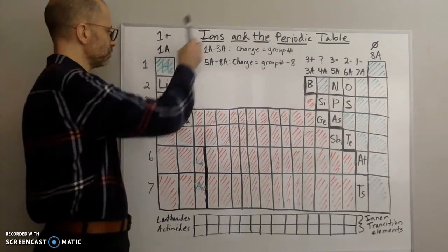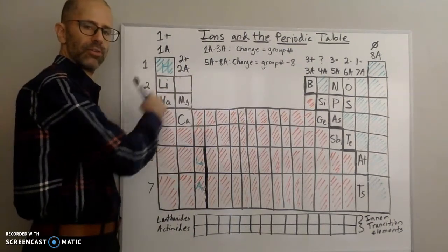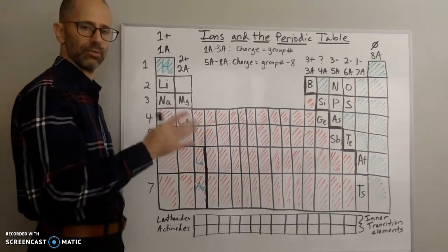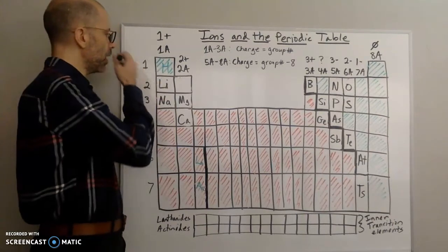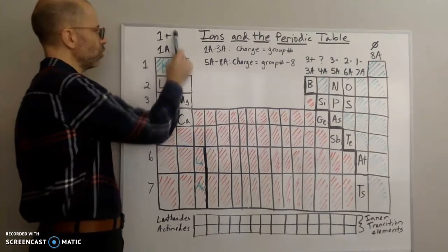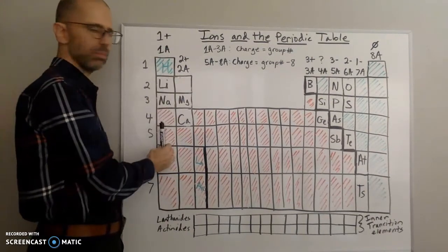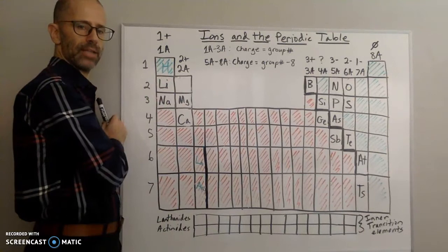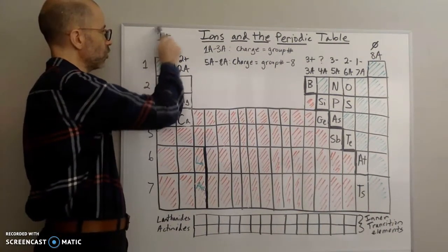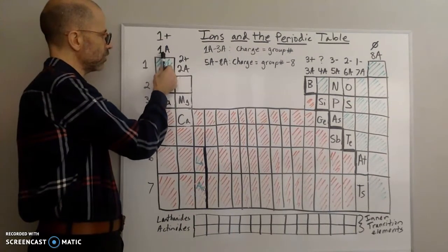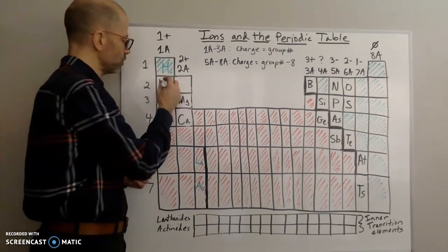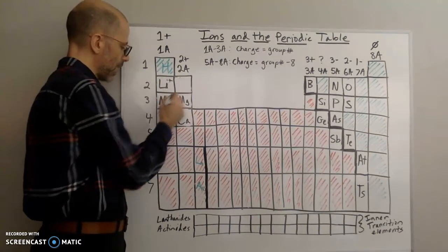Starting on the metals side of the table, we get positive ions. Metals tend to give away their electrons — we'll talk more about that in a later video. Group 1A elements all have a positive one charge on their ion. These atoms tend to lose one electron, giving them a positive one charge.